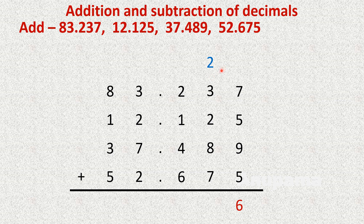Then the hundredths column: 2 plus 3 is 5, plus 2 is 7, plus 8 is 15, plus 7 is 22. We write 2 here and carry 2.